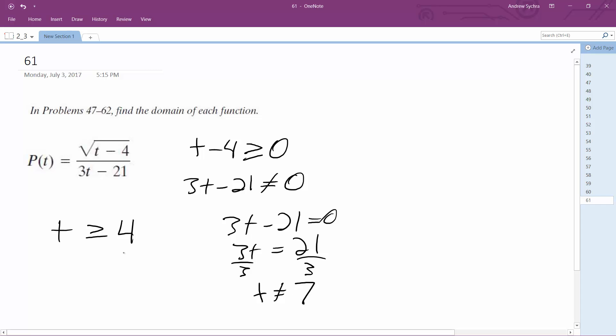So that means t can be from 4 to 7, but it cannot be 7, in union with 7 to infinity.